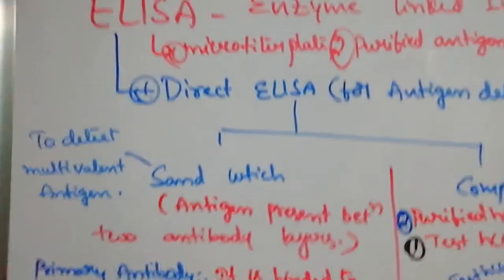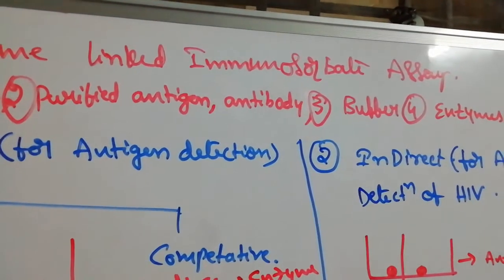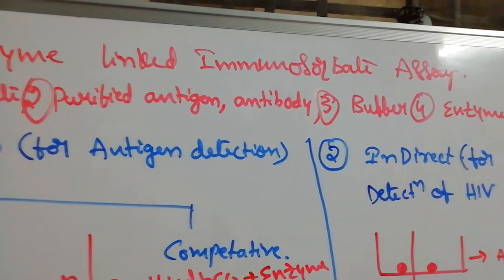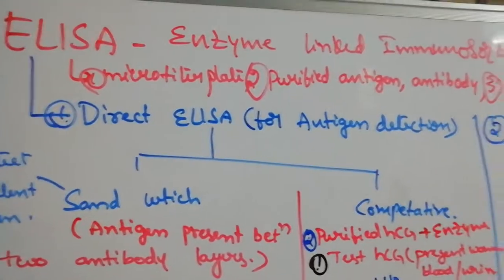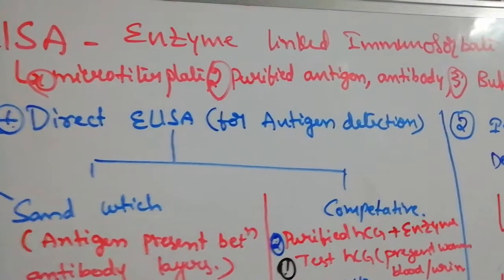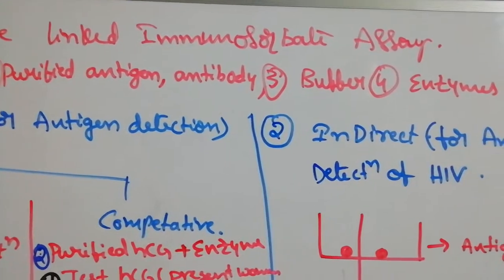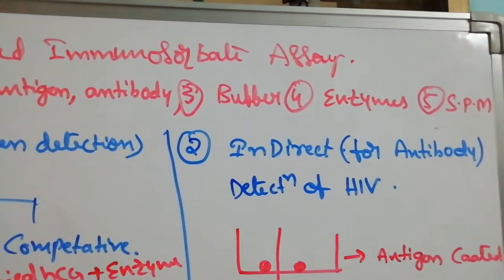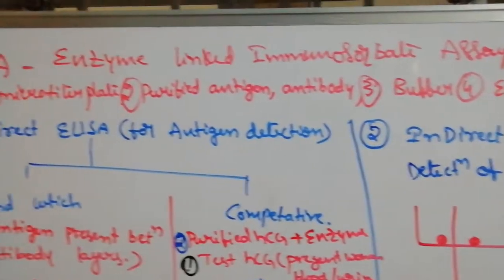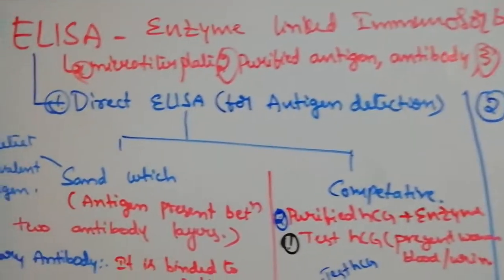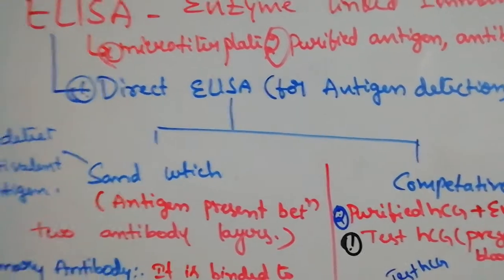Next topic is the ELISA, enzyme-linked immunosorbent assay. The requirements here are a microtiter plate, purified antigen and antibodies, buffer, enzymes, and a spectrophotometer. These are the requirements for the ELISA test. ELISA is divided into two types.